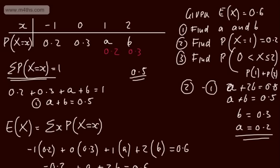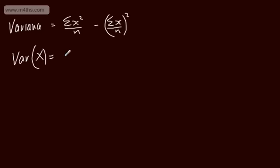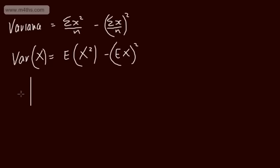We've worked with variance before — it's the average squared distance of each observation from the mean. In general, variance equals the sum of x² over n minus the square of the sum of x over n, or informally: the mean of the squares minus the square of the mean. When working with a discrete random variable, Var(X) = E(X²) − [E(X)]². Variance is a measure of spread, while the mean or expected value is a measure of location.